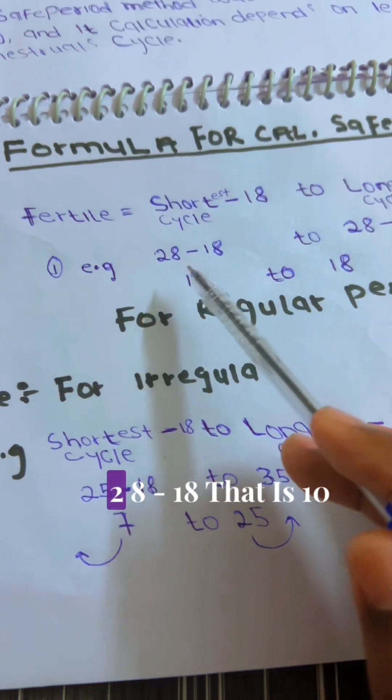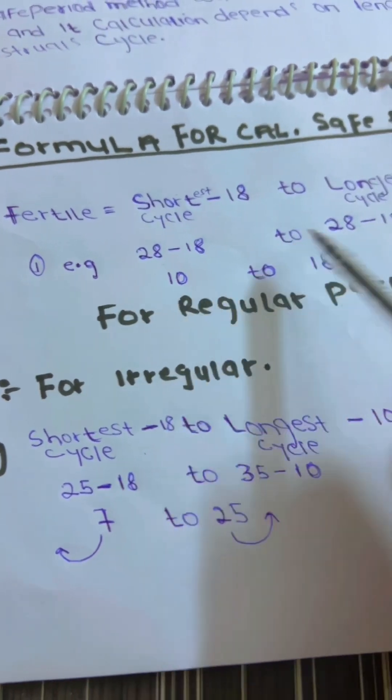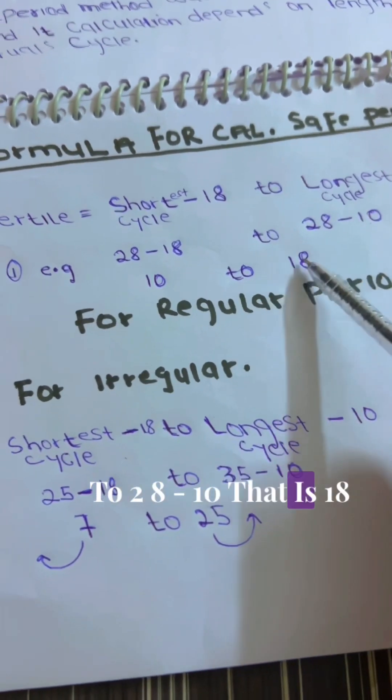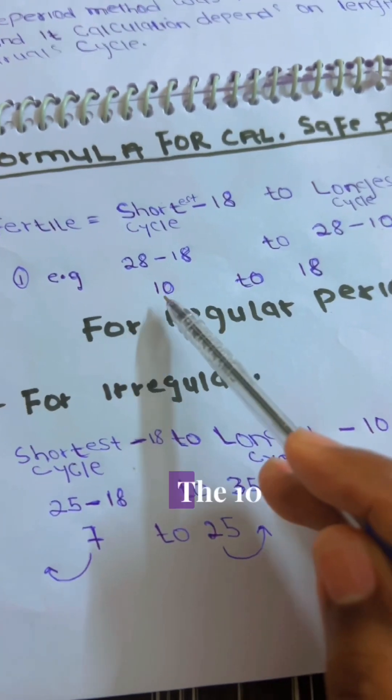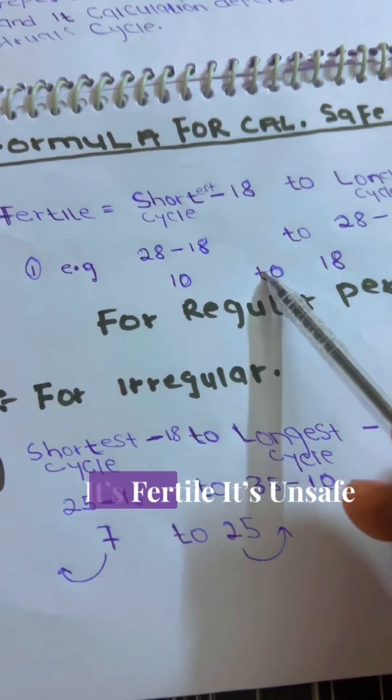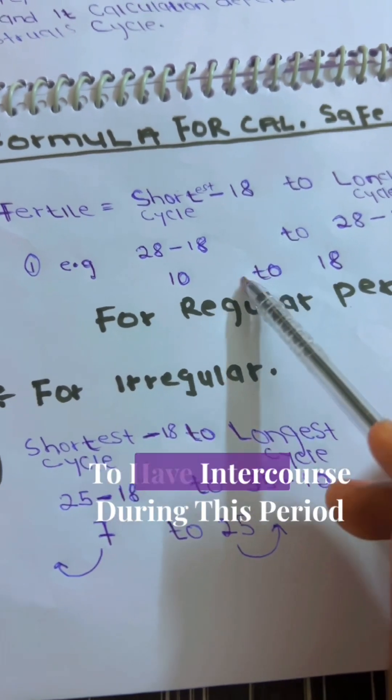28 minus 18, that is 10, to 28 minus 10, that is 18. Then, from day 10 to 18, it is fertile, it is unsafe to have intercourse during this period.